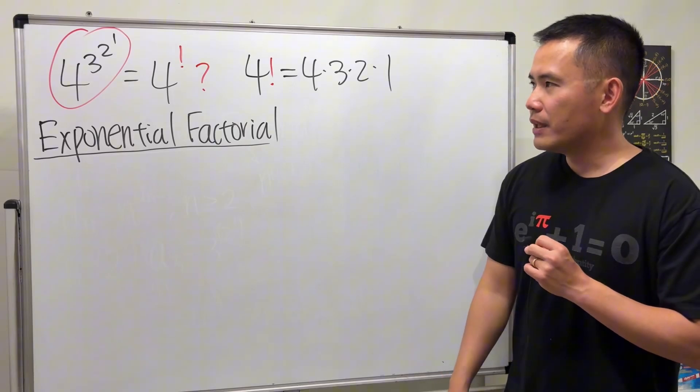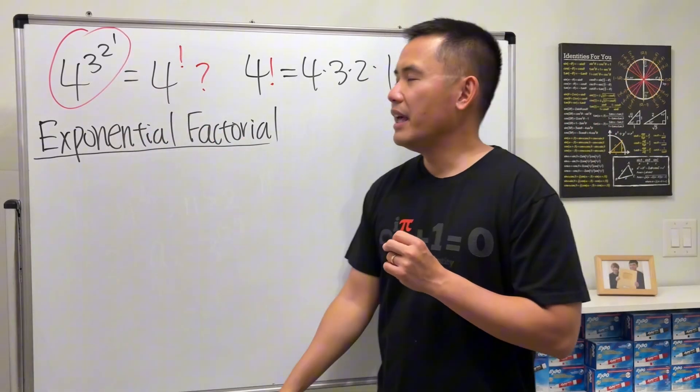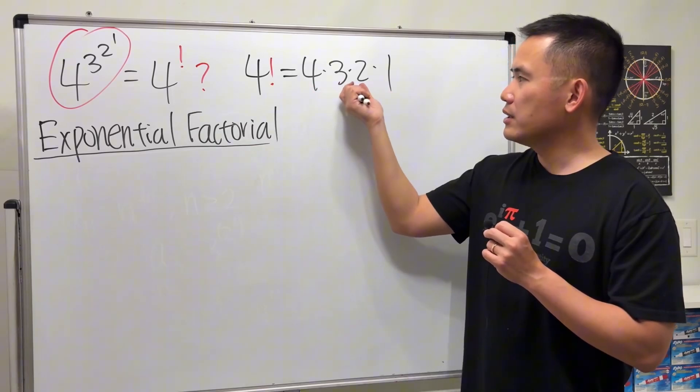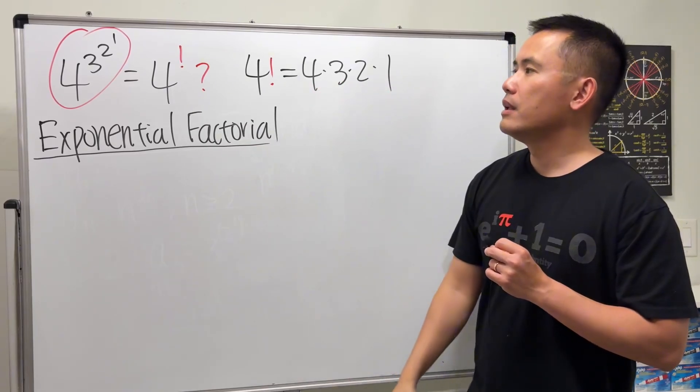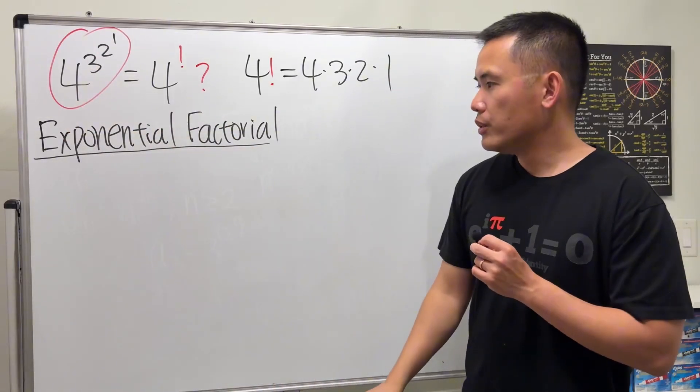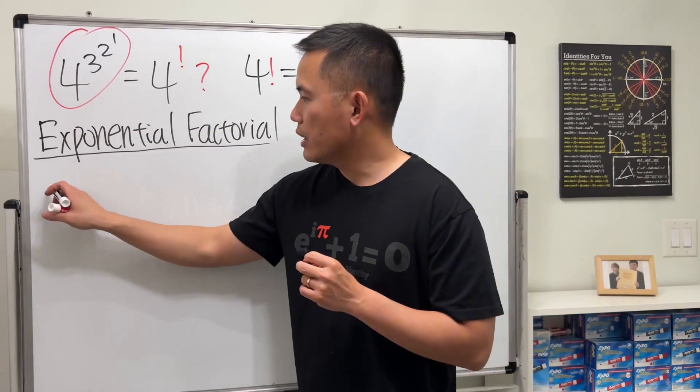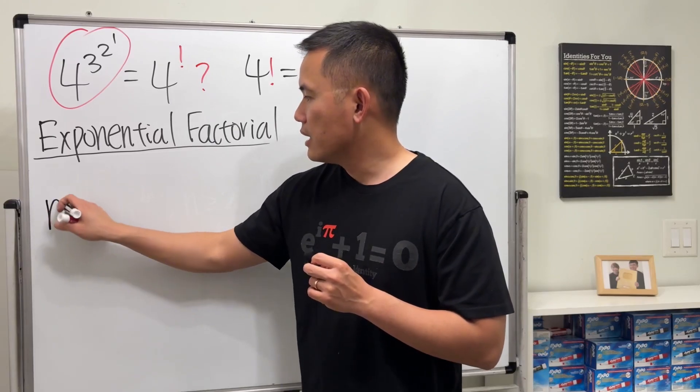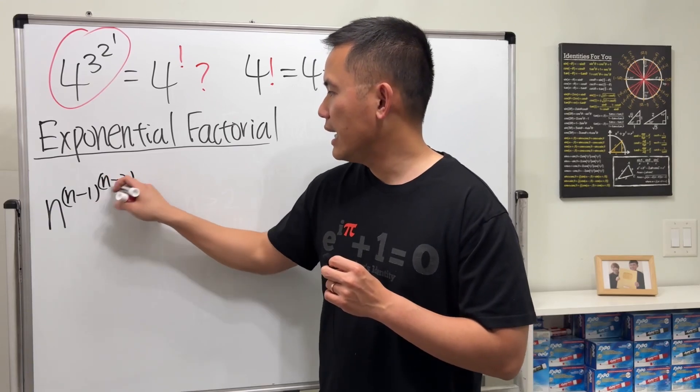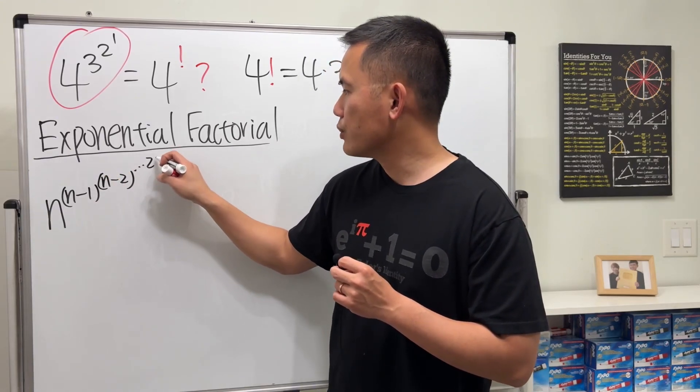So for exponential factorial, it's pretty much just like this. Instead of multiplying, let's start with the first number and each time the number goes down by one, we are going to build up the power instead. So you can look at it like this. You can write down a formula as n, and then raise to the power of n minus one, and then raise to the power of n minus two, and so on, up to two and one.